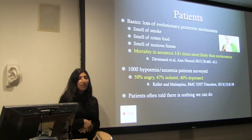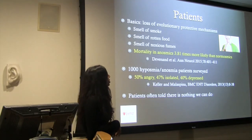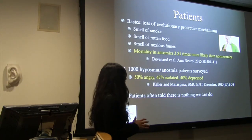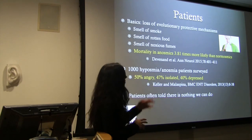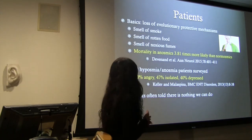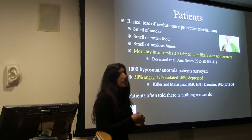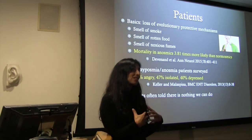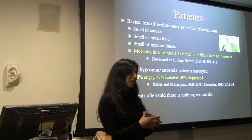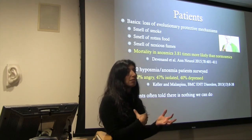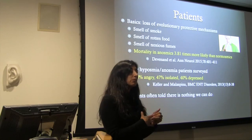It all comes back to our patients. Mortality in anosmic patients is 3.81 times more likely than in normosmic patients. In surveys of these patients: 50% are angry, 40% are depressed, and many are isolated. That is what I see when I see these patients in clinic — it really does have quite a great effect on their social interactions and quality of life. And you can take that all the way back to where we started: our realities are shaped by the way that we perceive our environment, and having a huge loss of your ability to perceive your environment and interact with other people really affects your quality of life.